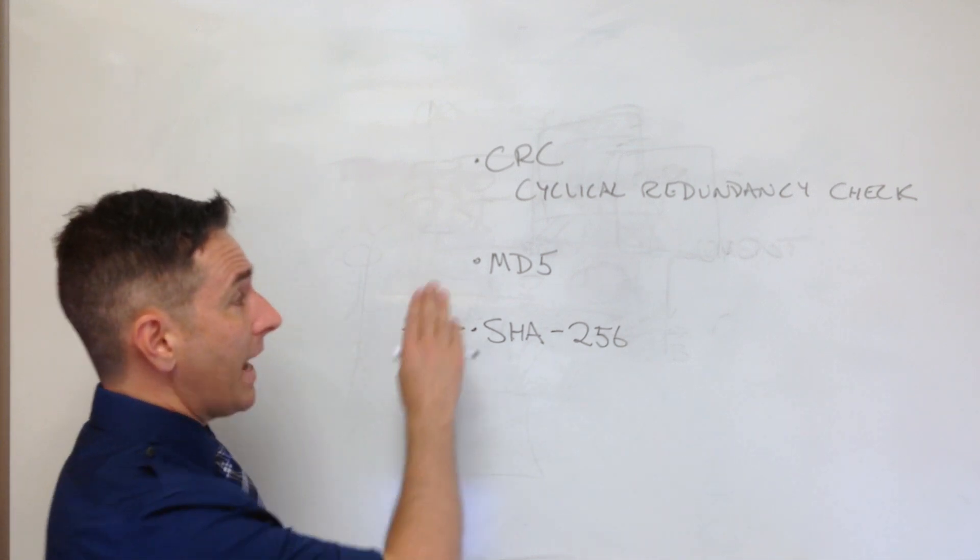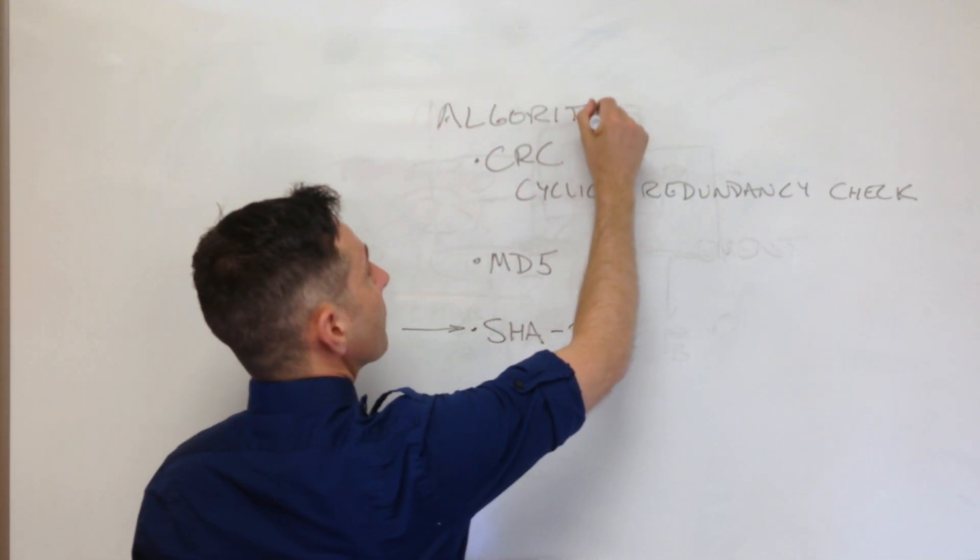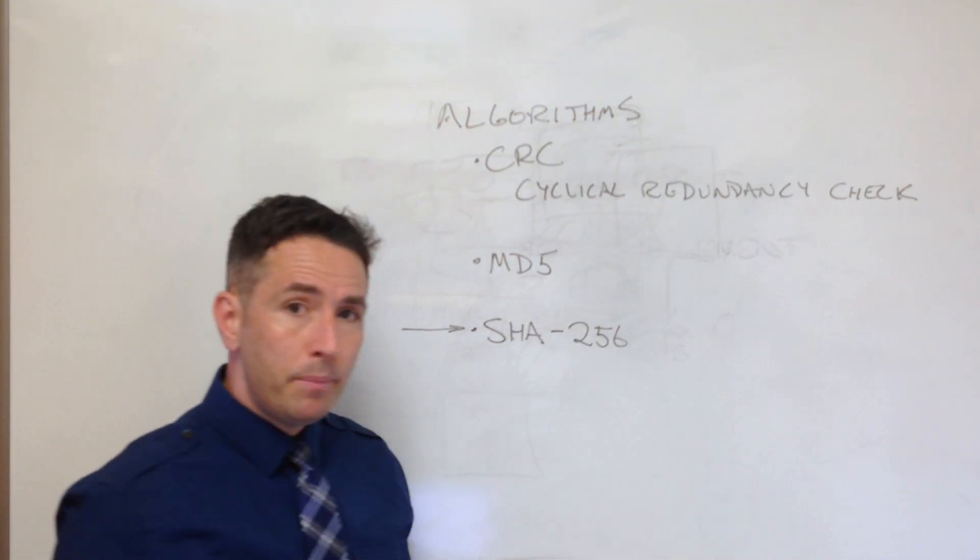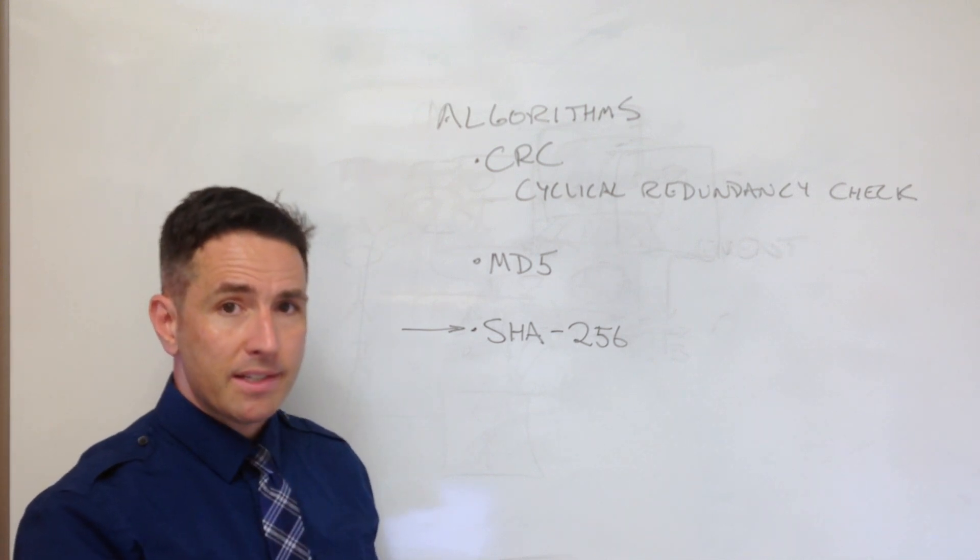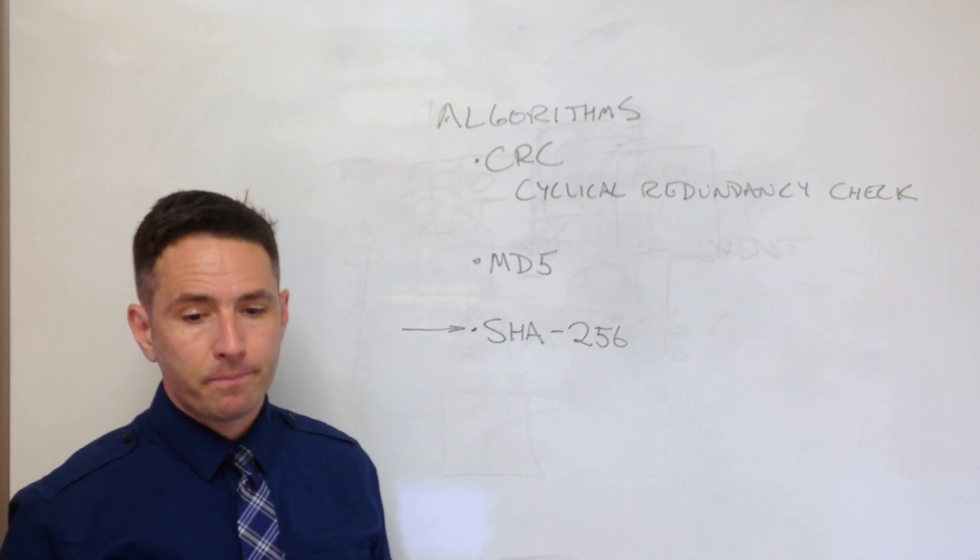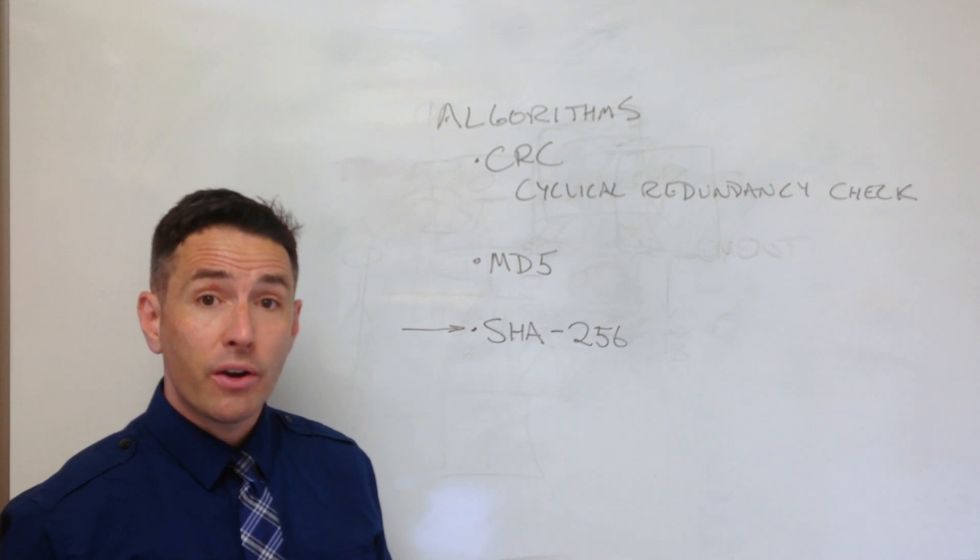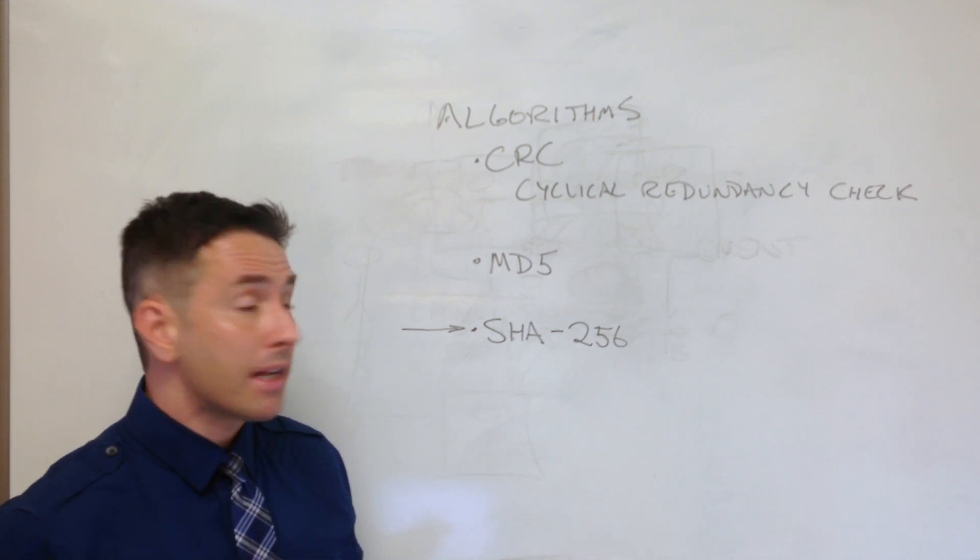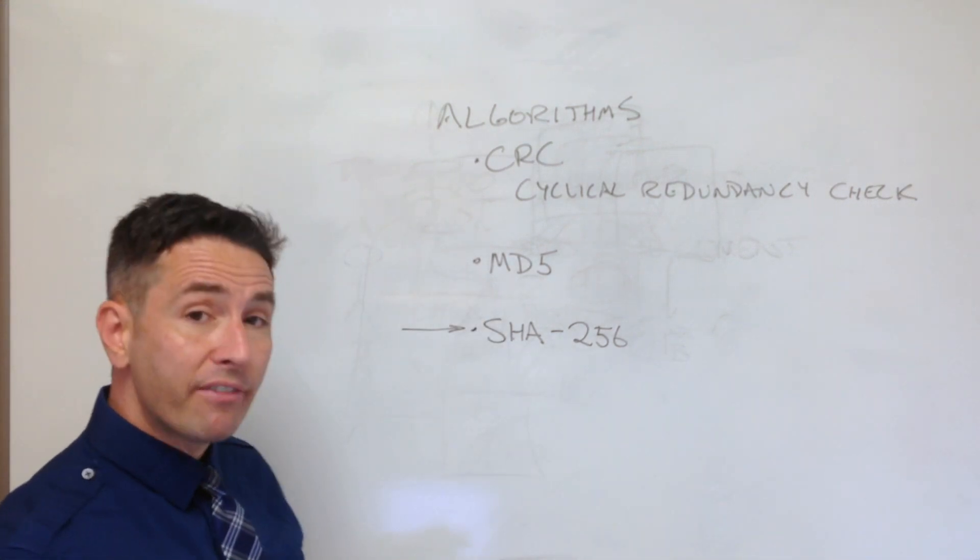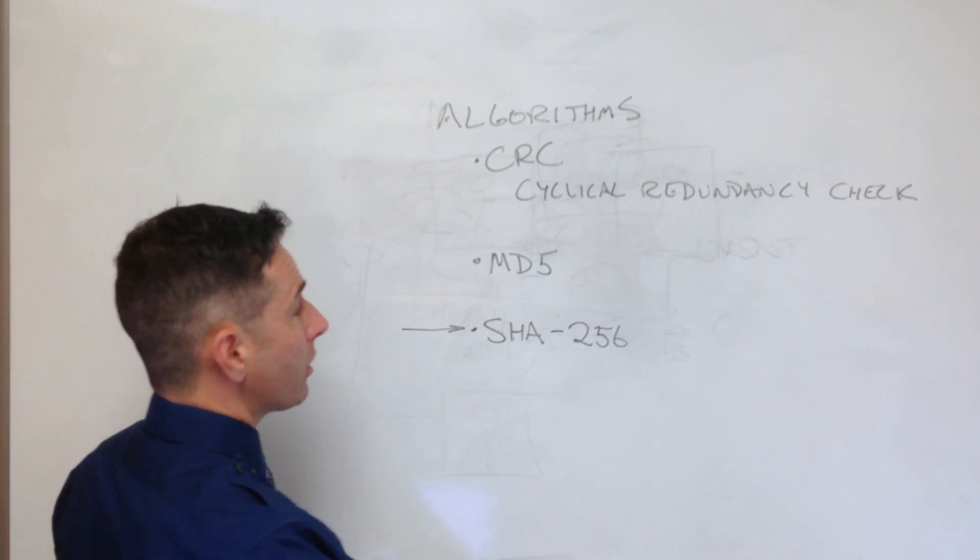So these are each algorithms, and people can write programs that implement this algorithm and run on different operating systems and in different environments. So what are some important properties that a hash code has to have? What are some important properties that one of these algorithms have to have in order for it to make a good hash code?